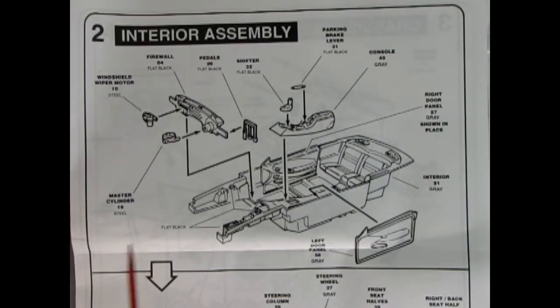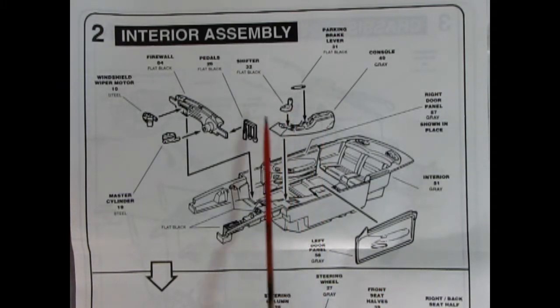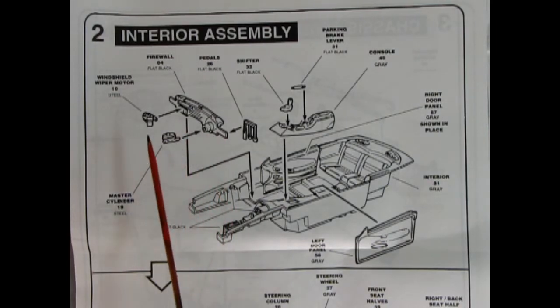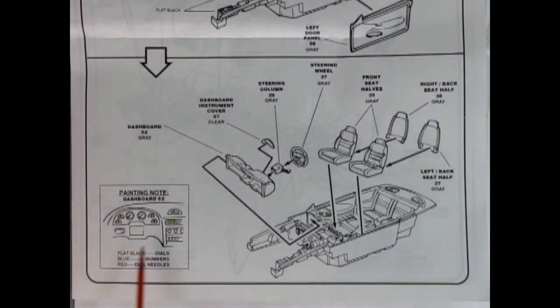Now panel two jumps right into the interior. Take a look at this, we got our inner fender wells molded in place and then the interior bucket and separate side door panels, separate console, separate parking brake lever, a gear shift lever, and then we've got our pedals here for the standard transmission car, a firewall master cylinder and the windshield wiper motor. Then we're instructed to go down here and see the rest, and here we are with a note on how to paint the dashboard, putting all your dials and details in. The piece is separate and pops into the dashboard there. We've got our steering column and our steering wheel and our front bucket seats with the backs going on.